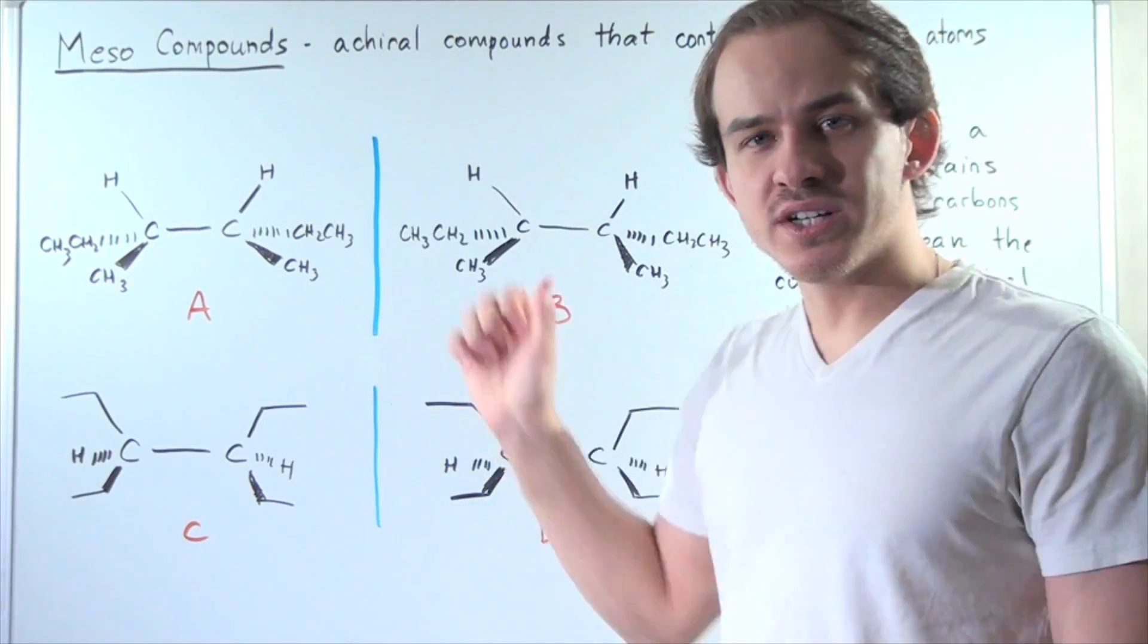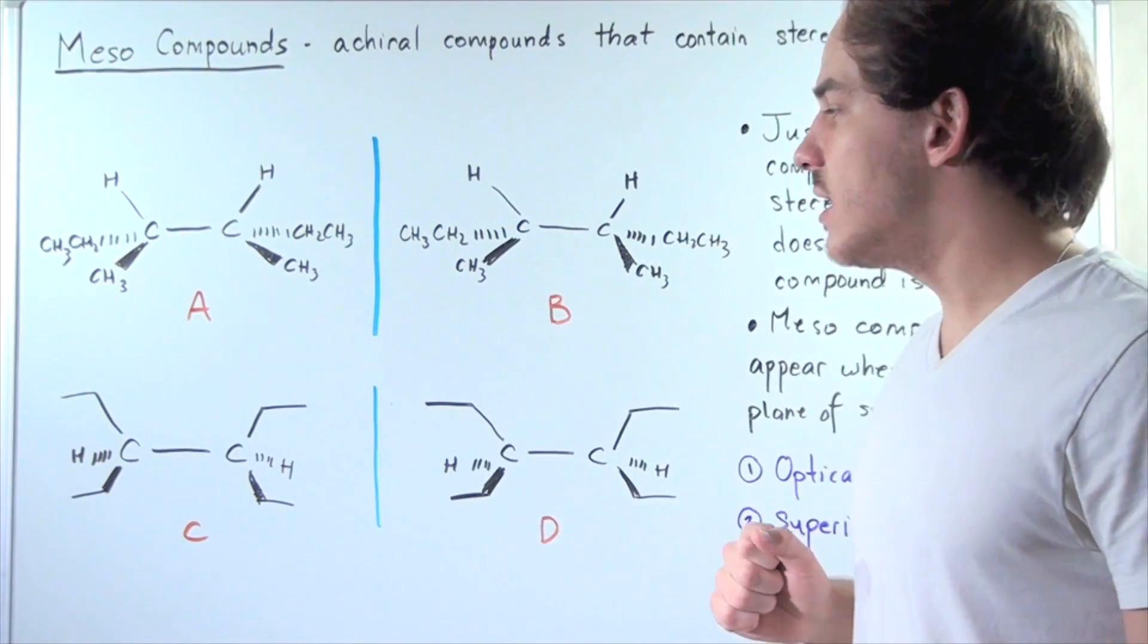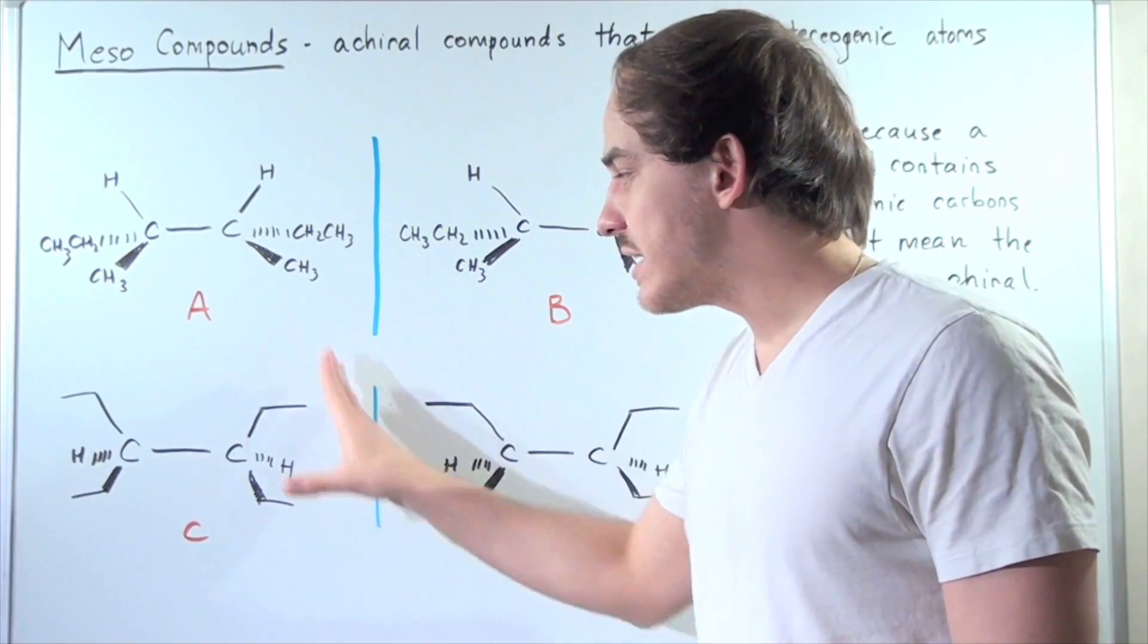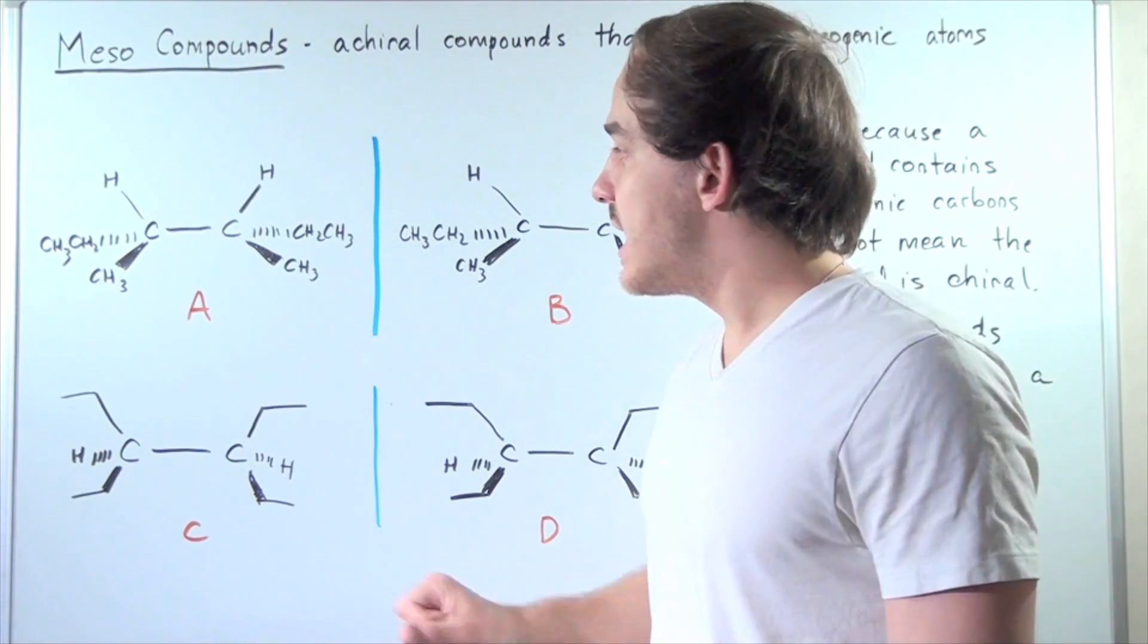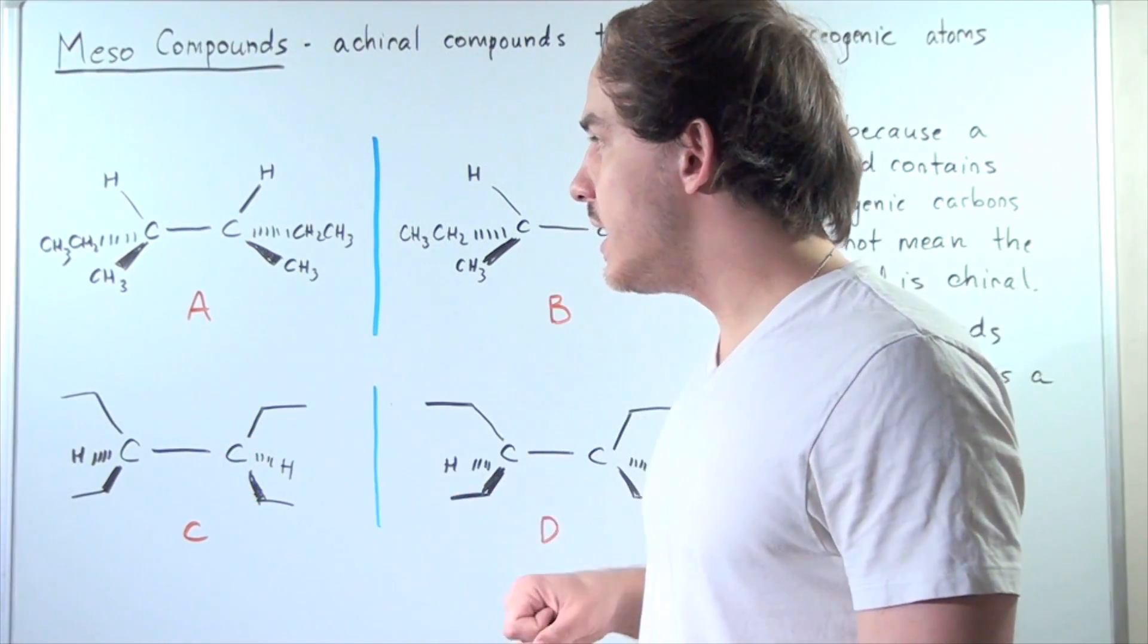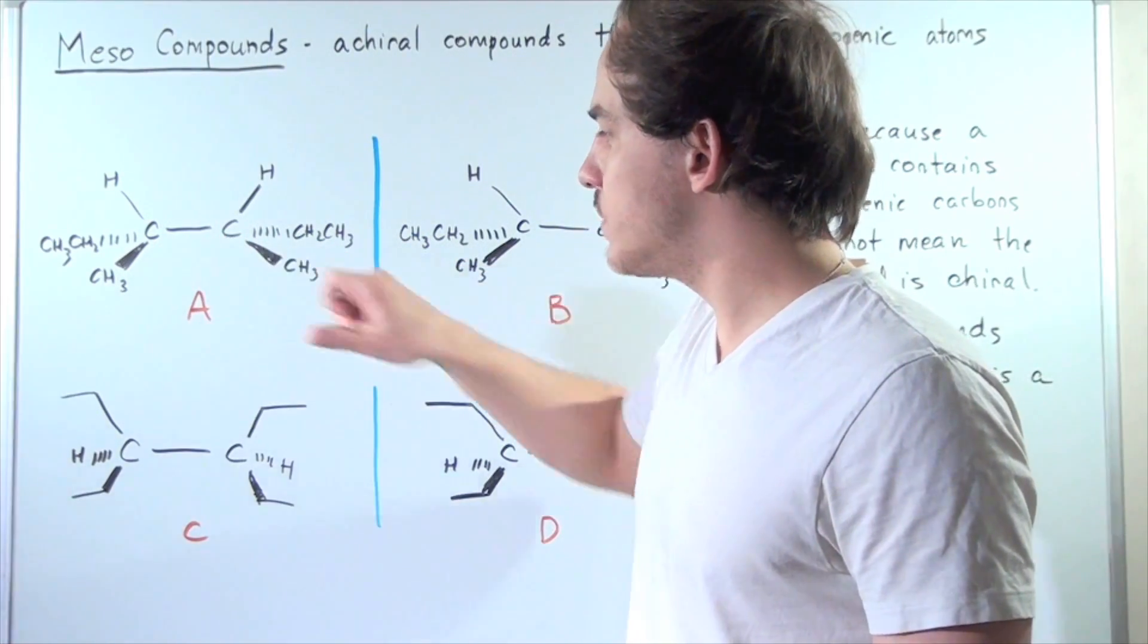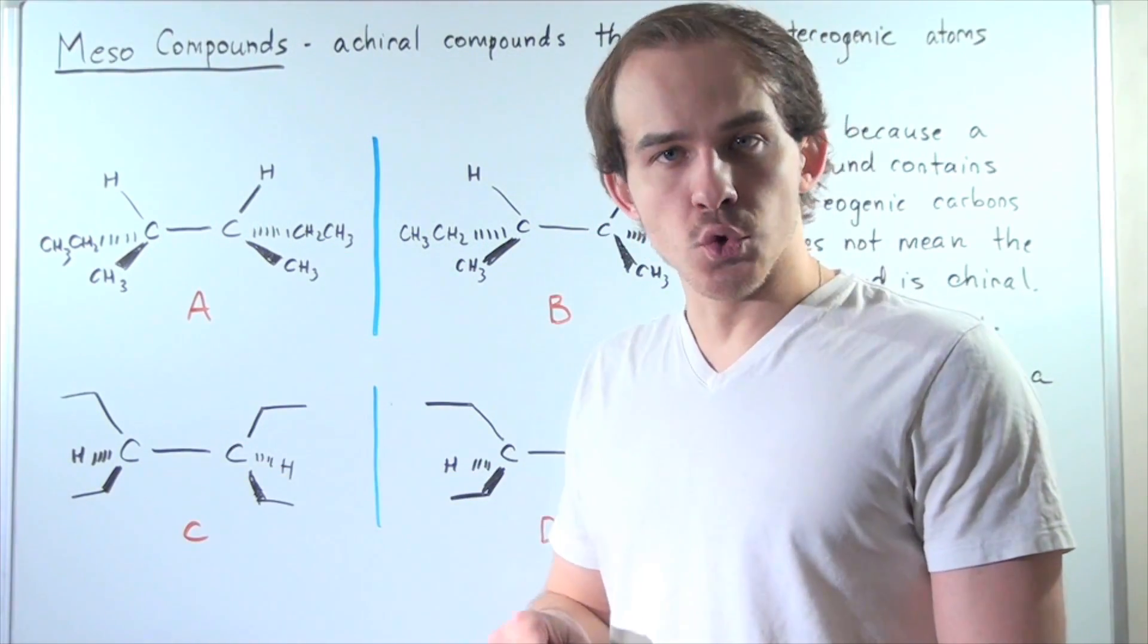So let's look at two examples of compounds. Let's suppose we have compound A that looks like this and compound B that also looks like this. Both compounds A and B have two stereogenic carbons, carbon-1 and carbon-2.